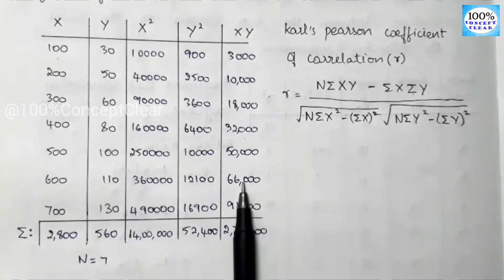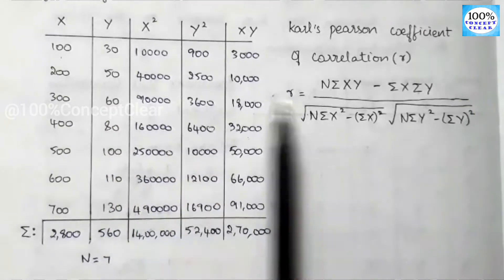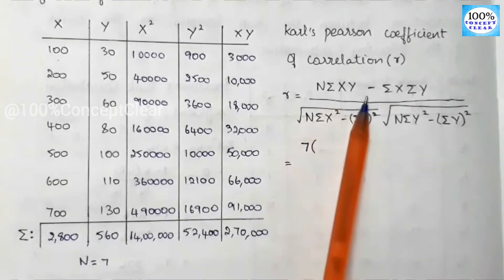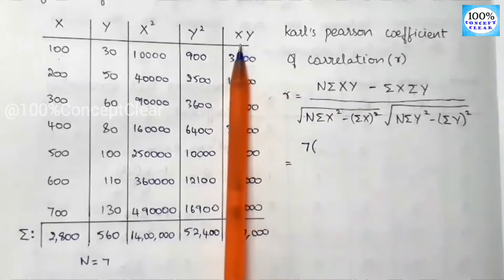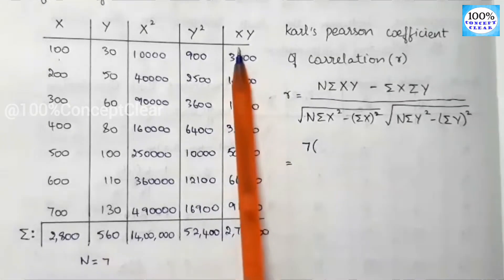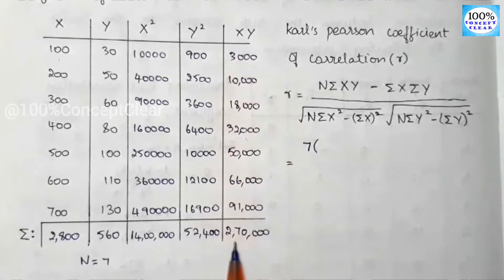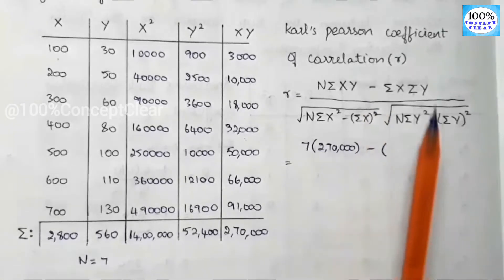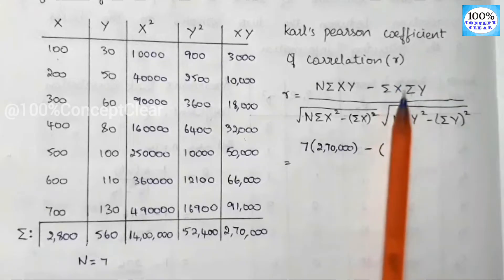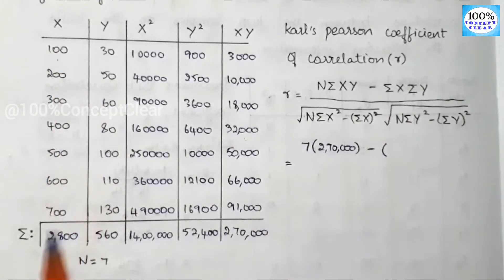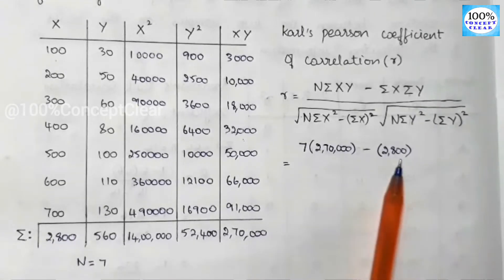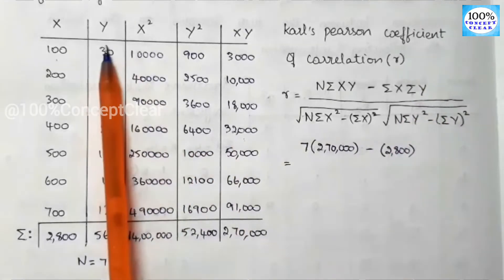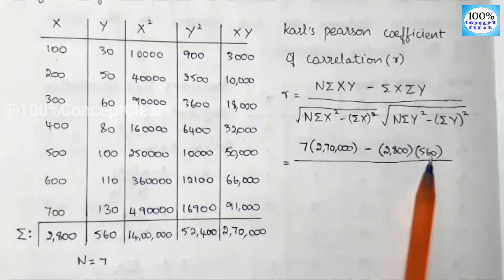We will apply all values to the formula. n value is 7. Summation of xy is 2,70,000. Summation of x is 2,800. Summation of y is 560. Divided by the root of n value 7 into summation of x².